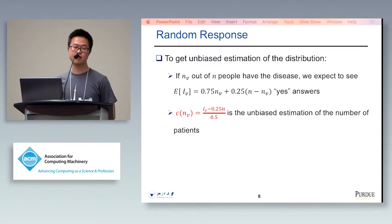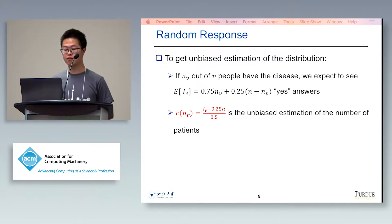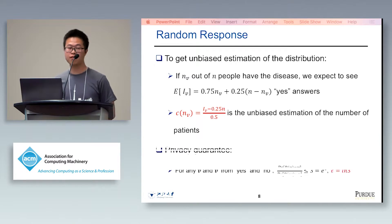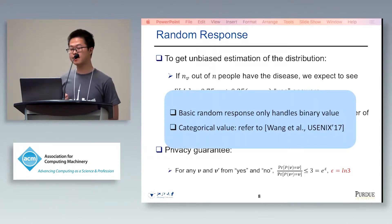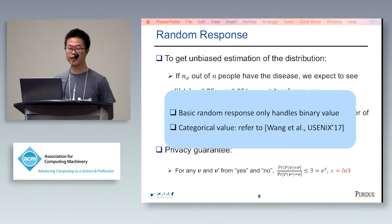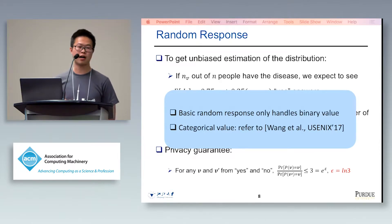After receiving the random answers from users, the aggregator can use this formula to get an unbiased estimation of the number of patients. From the definition of optional LDP, a random response achieves ln(3)-LDP. This basic random response can only handle binary values. For categorical values, you can refer to Tianhao's USENIX paper, which provides a systematic comparison of different Frequency Oracle protocols. These protocols are mostly based on the basic random response.